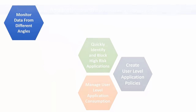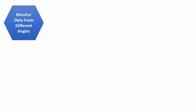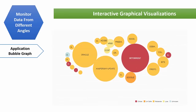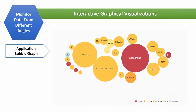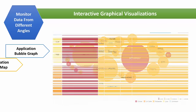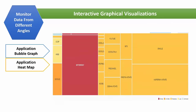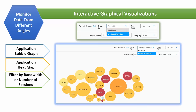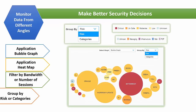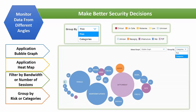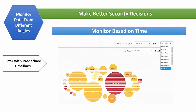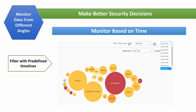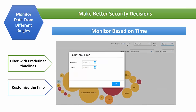Unique to Juniper Networks, monitor and control high-risk applications through the application bubble graph or zoomable bubble graph. Monitor applications from the traditional industry heat map, choose from graphical chart views or detailed grid views, and sort based on bandwidth or number of sessions. Classify based on risk level associated with the application or predefined categories. Narrow down and filter the information based on predefined timelines or create a custom timeline.